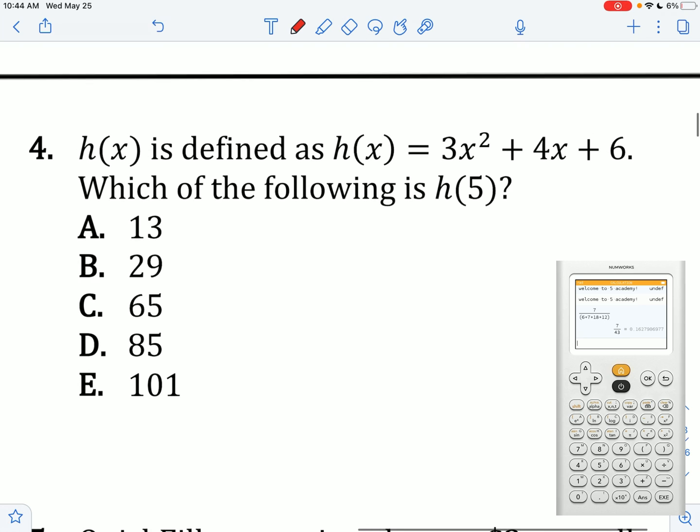H of x is defined as this. Which of the following is H at 5? So 3 times 5 squared is 3 times 25, plus 4 times 5, plus 6. That's 75 plus 20 plus 6. That's 101.